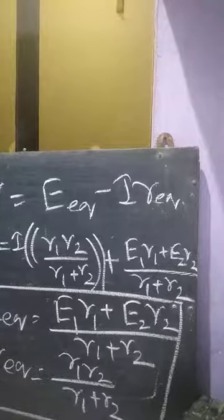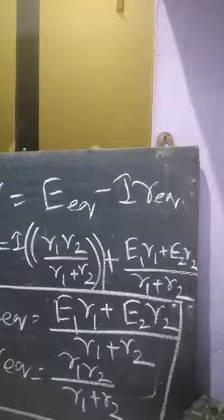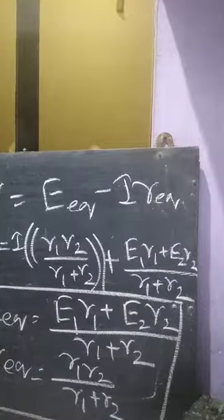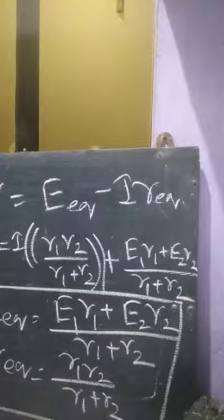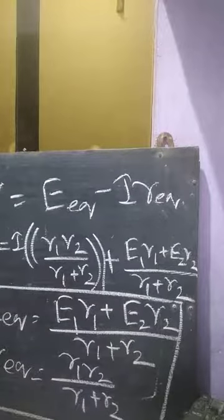When cells are connected in series, it increases the voltage. When cells are connected in parallel, it increases the current.